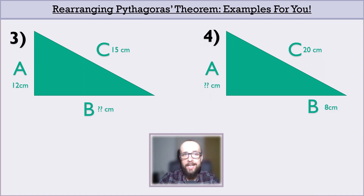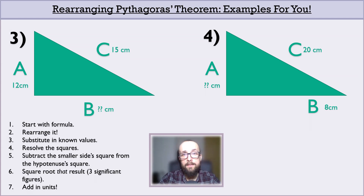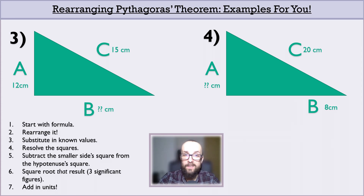And just like earlier, here are a couple of exercises for you to work through. In case you need reminding of the steps, here is a quick guide. For both exercises, can you find out the length of the unknown side of the triangle? Remember to record your answer to three significant figures and don't forget to include units. If you're doing these examples yourself, pause the video now and work them out — I'm going to give you the answers in 5, 4, 3, 2, 1.